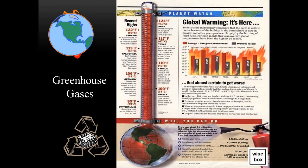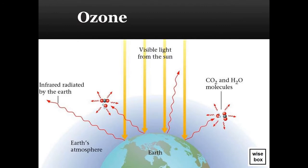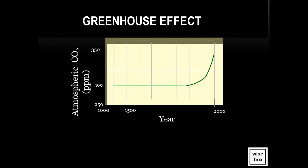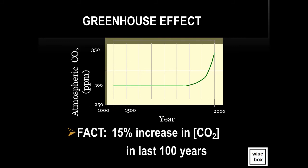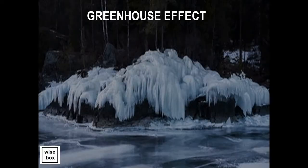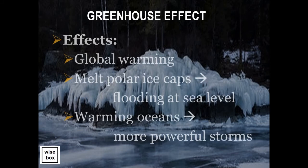Here is the effect of increasing greenhouse gases on Earth's temperature, and an illustration of how carbon dioxide traps infrared light and heat from the Sun. In the last 100 years, there has been a detrimental increase in carbon dioxide concentration in Earth's atmosphere. The negative effects of an abnormal increase in greenhouse gases are global warming, melting polar ice caps which results in flooding at sea level, and warming oceans which results in more powerful storms.